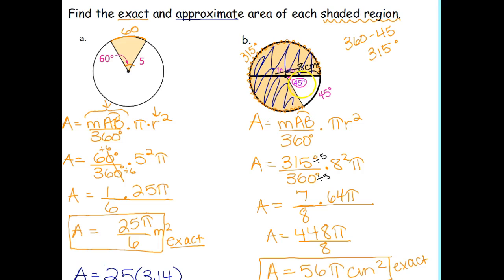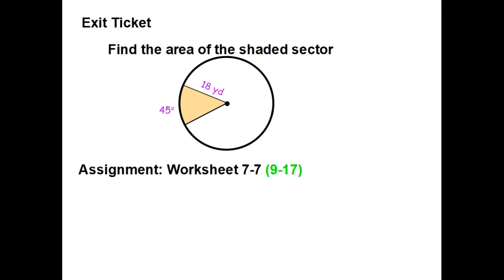If you used 45 degrees, that would give you the unshaded portion — but the problem asks for the shaded region, which is why we used 315 degrees. There's an exit slip today. For the assignment, please make sure you're only doing problems 9 through 17 on the worksheet. It's also attached on Google Classroom. If you have any questions, just let me know.